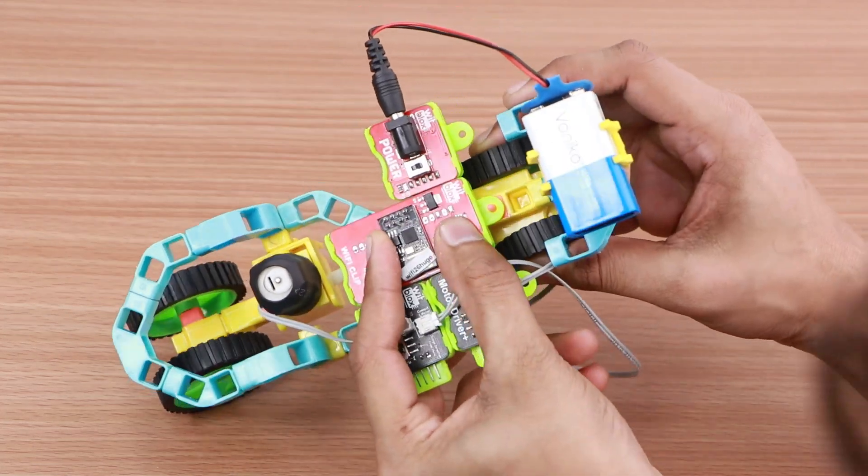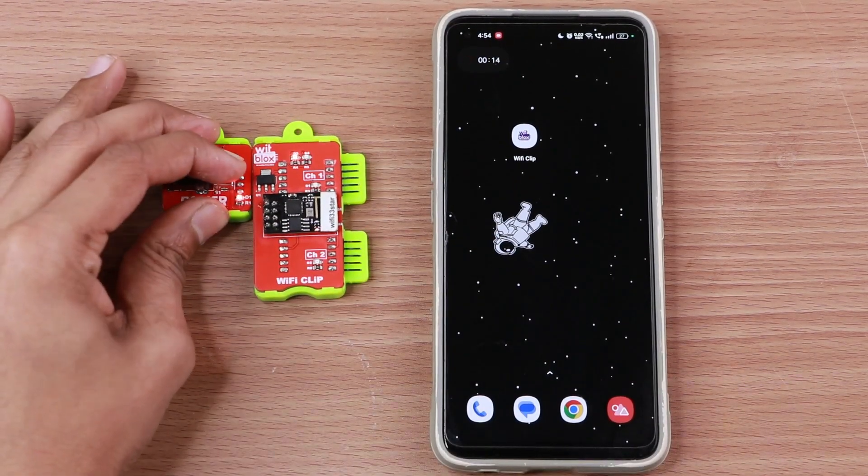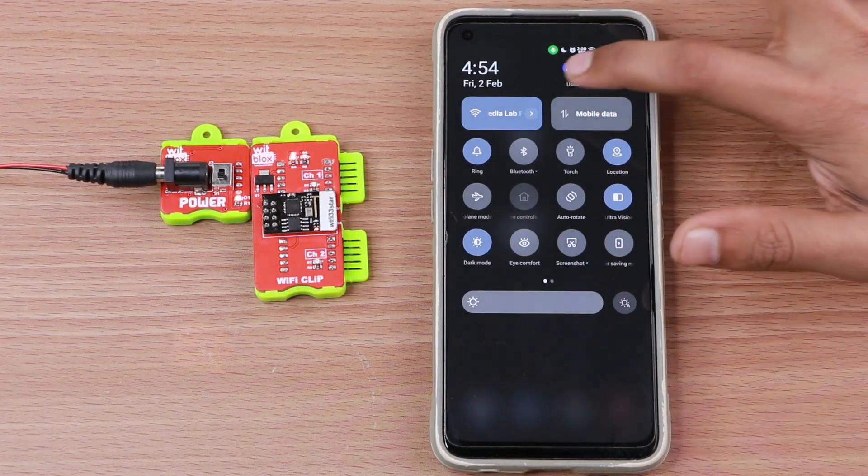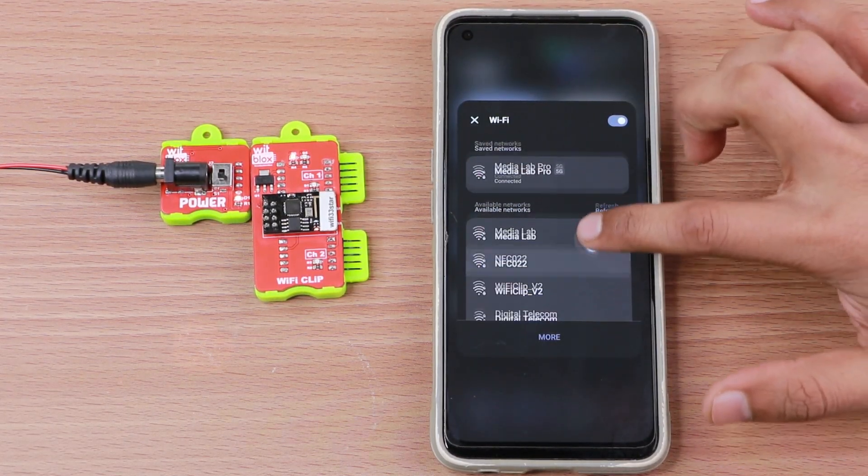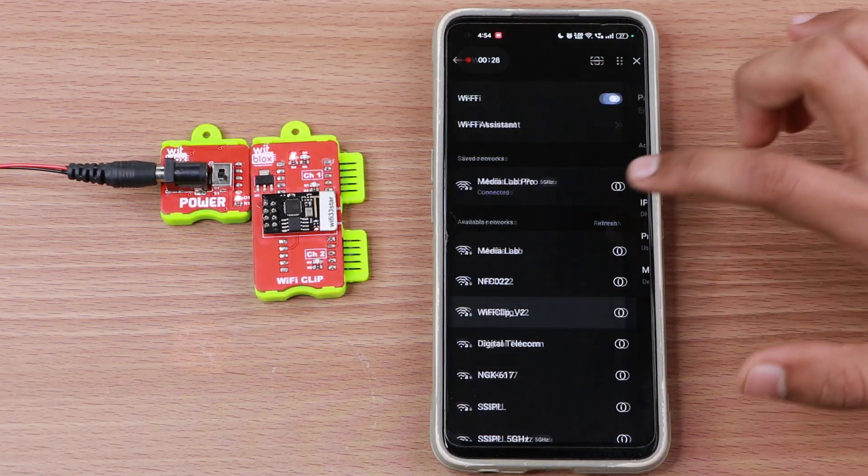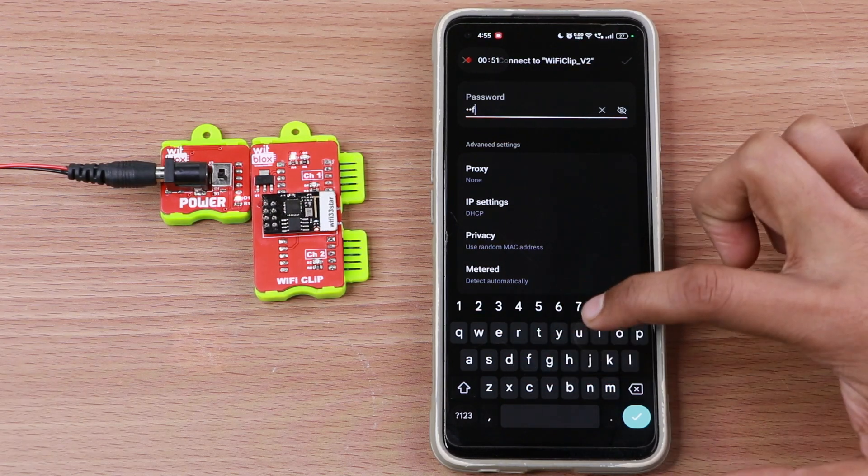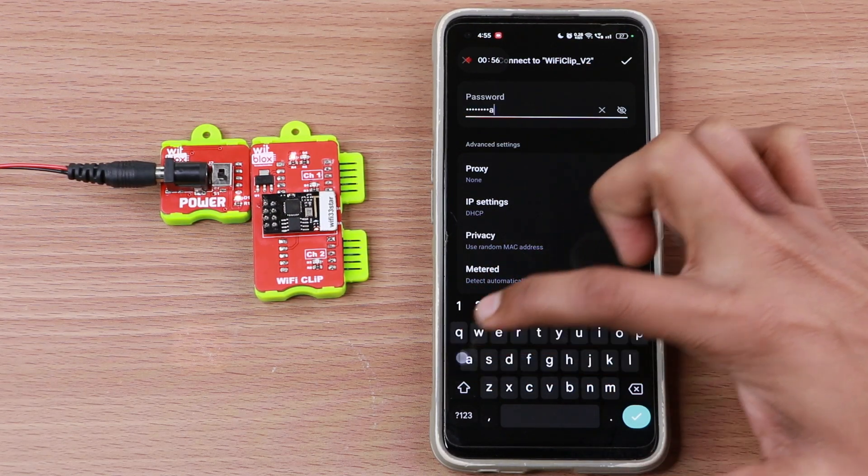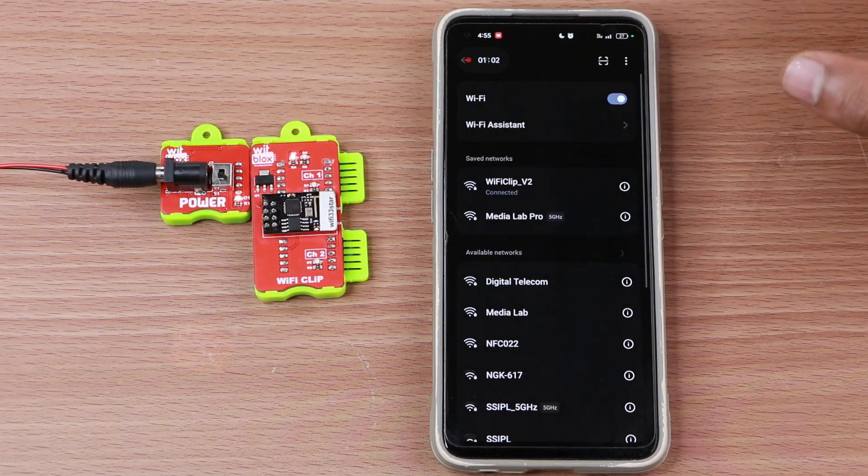Now let's see how to connect and use our Wi-Fi Whitmobile using a mobile phone. First, turn on the power blocks. This ensures that the Wi-Fi blocks is receiving power. Now turn on your phone's Wi-Fi and go to the Wi-Fi settings. Here, search for the Wi-Fi network with the name Wi-Fi Clip V2. Now connect to the Wi-Fi Clip V2 by entering the password of the Wi-Fi blocks. The password is mentioned on the Wi-Fi chip. Once the password is entered correctly, it will display connected.